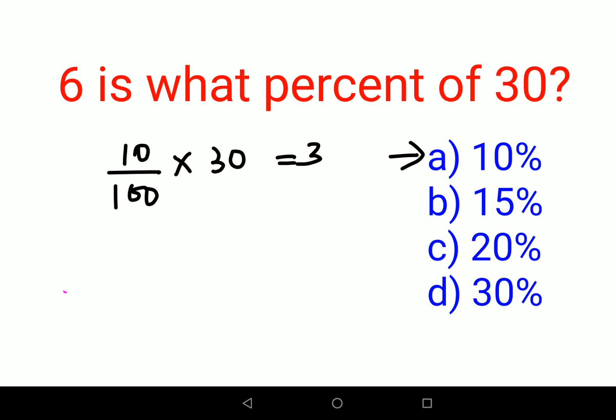So if I multiply both sides by 2, I get the answer as 6. So basically, you should get what? 2 into 10, that is 20%. That is my answer.